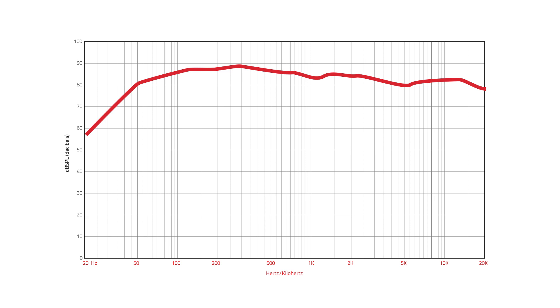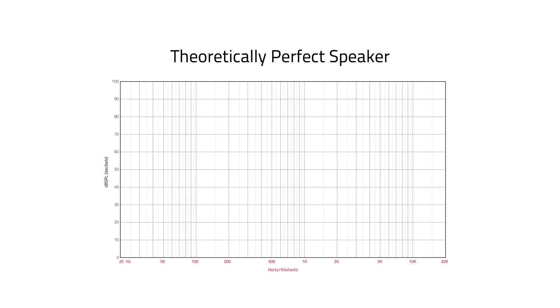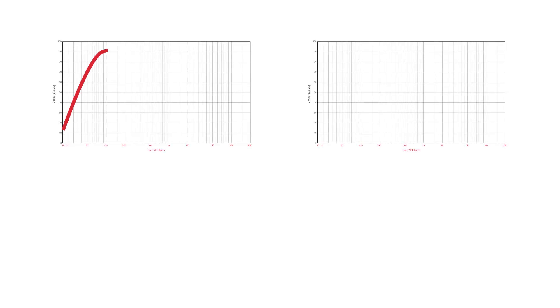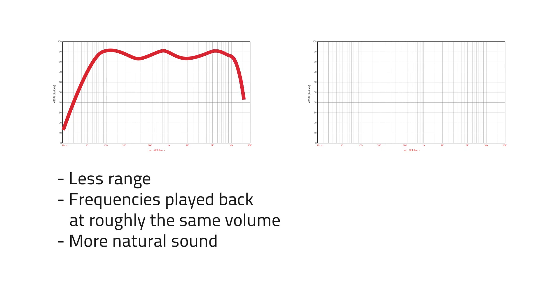The plot of a theoretically perfect speaker will be a flat line. In practice, the speaker's ability to reproduce sound frequencies at roughly the same volume is sometimes more important than the frequency range itself.